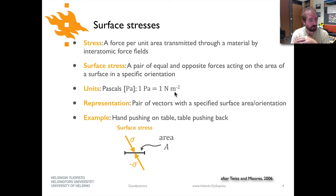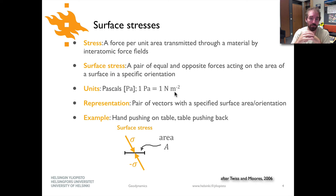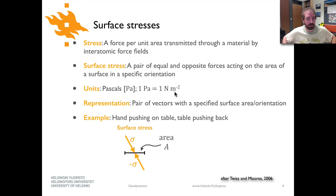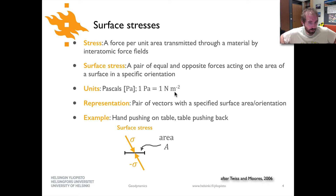The way that we represent stresses is the same way that we represent forces, except we have a pair of vectors now. If you're going to indicate a surface stress, you would often also indicate the surface area and orientation that you're referring to. An example of surface stress would be if you push down on a table with your hands — you apply a force, the table pushes back, and those two stresses balance one another. The area in that case is the area of your hands touching the table.